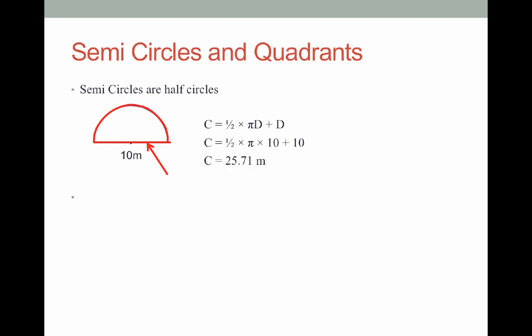In the end, we're going to get an answer of 25.71 meters, and that's to two decimal places. The question doesn't say how many decimal places to round it off to, so you get to choose as long as it's accurate.